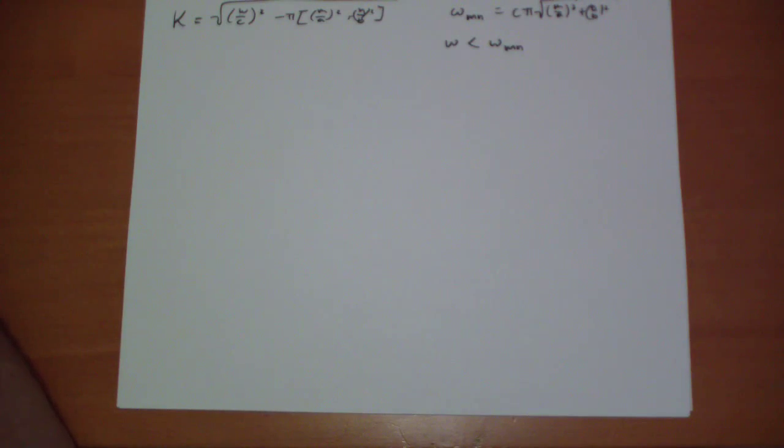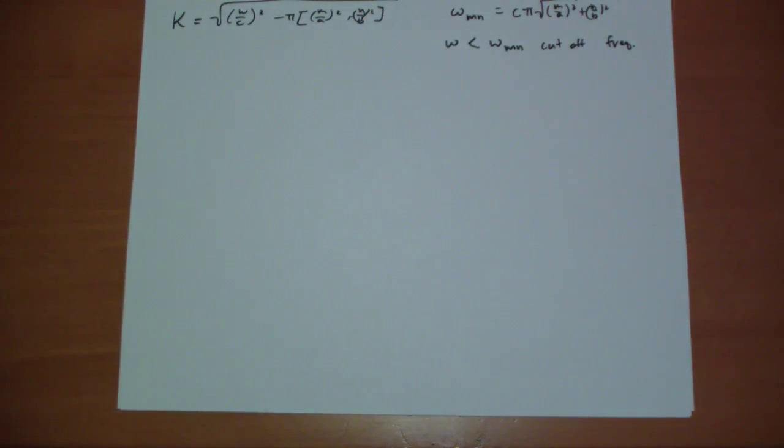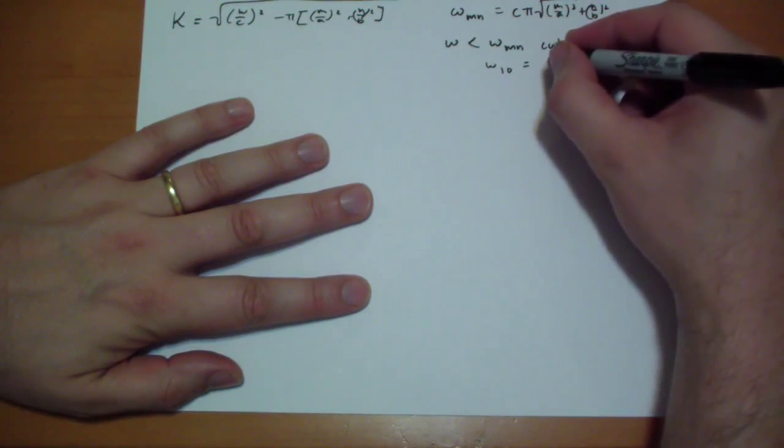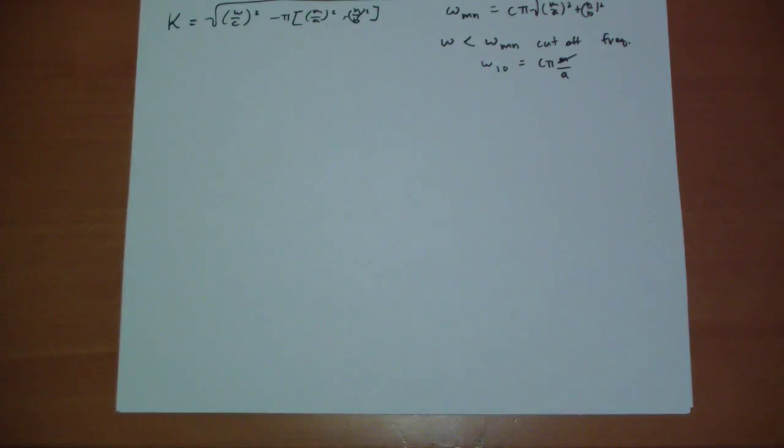And so what does that mean to have a Kappa that is imaginary? Well, that just means that your wave is attenuating. When you plug that Kappa into E to the IKX, you get E to the minus something X, which means the wave is just disappearing down the tube. So this is called the cutoff frequency. Frequencies below this won't travel down the wave guide. The lowest cutoff frequency occurs at the TE10 state, which would be just C pi over A. Any frequency smaller than that, and then none of the modes can carry the wave at all. So you get nothing. It just attenuates rapidly down the tube.